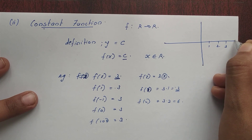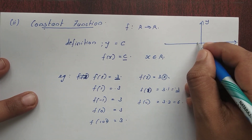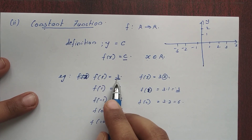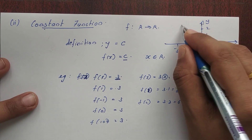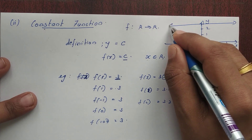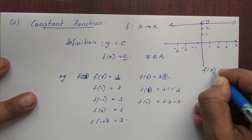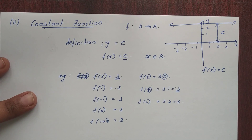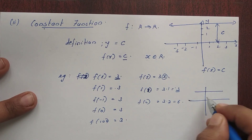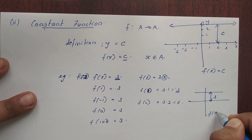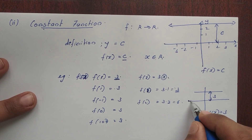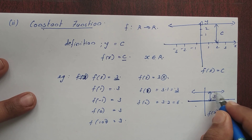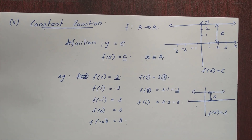Now let's look at the graph of the constant function. We have the x-axis and y-axis. The values on the x-axis are 1, 2, 3 and minus 1, minus 2, minus 3. The graph of the constant function is a horizontal line.